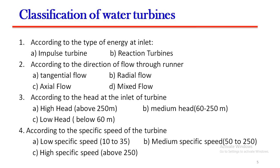Number three, according to the head at the inlet of turbine: high head, medium head, and low head. Number four, according to the specific speed of the turbine: low specific speed, medium specific speed, and high specific speed.